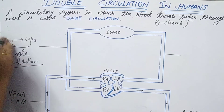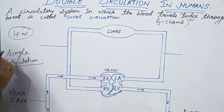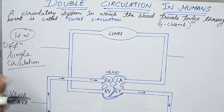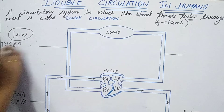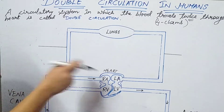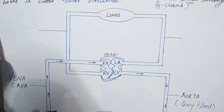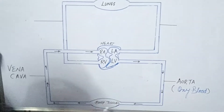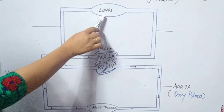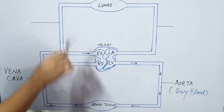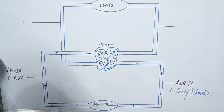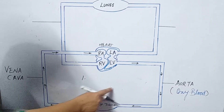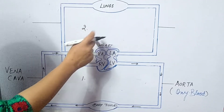Your homework is to find out the differences between single circulation and double circulation. Now, back to the double circulatory system. In the schematic diagram, you can see the heart, body tissues, and lungs. The double circulatory system is a combination of two circulations: systemic circulation and pulmonary circulation.